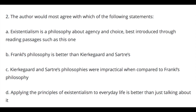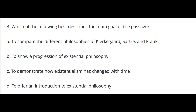Number two. The author would most agree with which of the following statements? A. Existentialism is a philosophy about agency and choice, best introduced through reading passages such as this one. B. Frankl's philosophy is better than Kierkegaard and Sartre's. C. Kierkegaard and Sartre's philosophies were impractical when compared to Frankl's philosophy. D. Applying the principles of existentialism to everyday life is better than just talking about it.